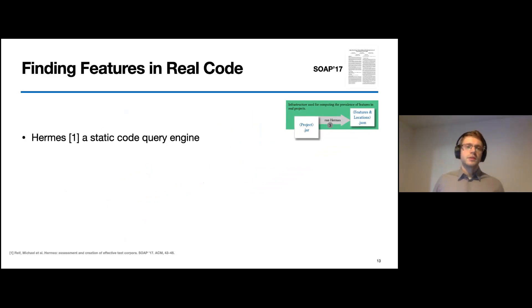Hermes is our self-developed static code query engine. If you want more information about Hermes, you can have a look into my thesis. The queries in Hermes are basically static analyses where each analysis identifies different features that are modeled in our test cases. For example, we have queries that identify relevant API calls, for example, the new instance method of the reflection API.